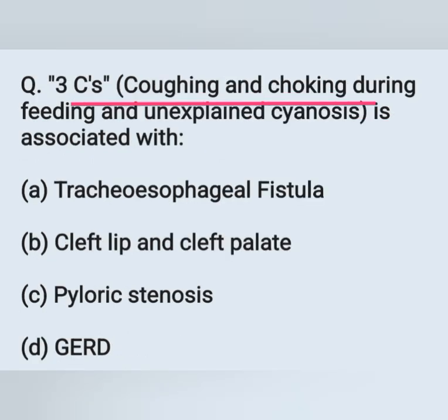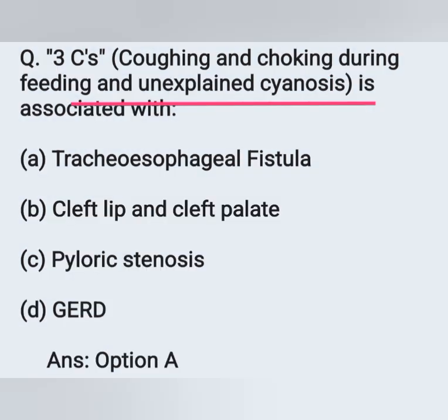The Three C's — coughing and choking during feeding and unexplained cyanosis — are associated with which condition? Option A: tracheoesophageal fistula. Option B: cleft lip and cleft palate. Option C: pyloric stenosis. Option D: GERD. The Three C's — coughing and choking during feeding and unexplained cyanosis — are manifestations of tracheoesophageal fistula. Option A is the correct answer. Another important manifestation is frothy saliva in the mouth, nose, and excessive drooling.